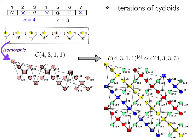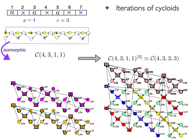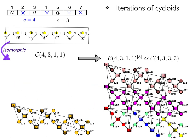If we take three copies of 4-3-1-1, by composition we obtain the iteration 4-3-3-3.